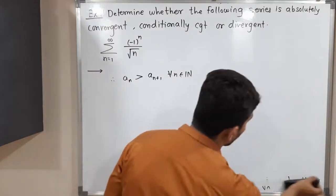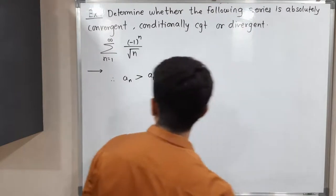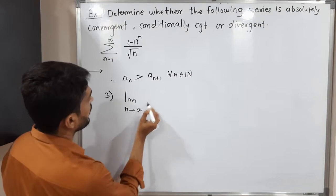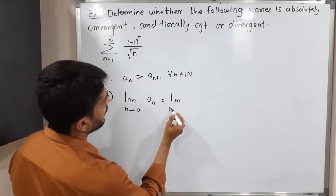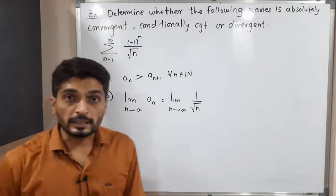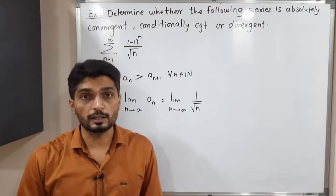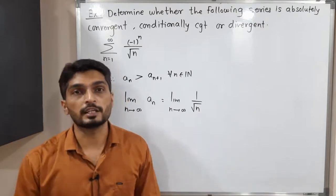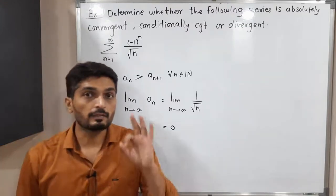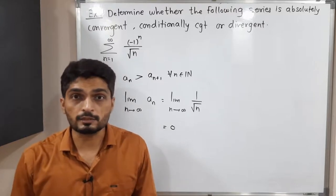For the third condition, we take the limit of a_n: limit as n → ∞ of 1/√n. As n approaches infinity, the denominator approaches infinity, so the value approaches 0. Therefore the limit equals 0, and the third condition is also satisfied.